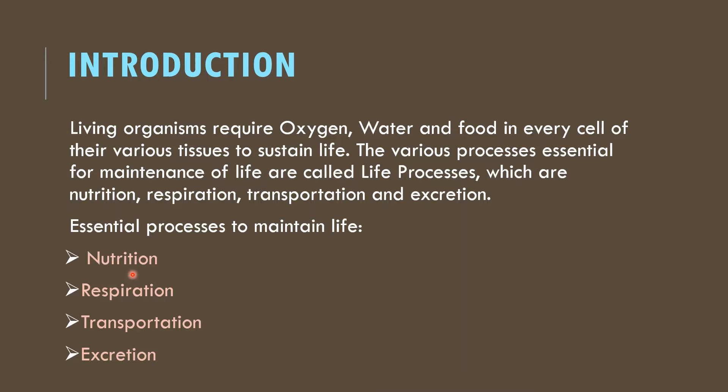Nutrition is a process in which living things obtain food. Plants are autotrophs, which prepare their own food, whereas heterotrophs are those living things which obtain food from autotrophs. The nutrition process involves absorbing that food, whether it is prepared on its own or obtained from autotrophs.